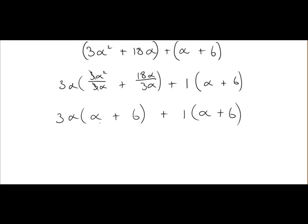So at this point you can see we have a common factor of α + 6. We have 3α(α + 6) and we have 1(α + 6). So we can rewrite that as (3α + 1)(α + 6).